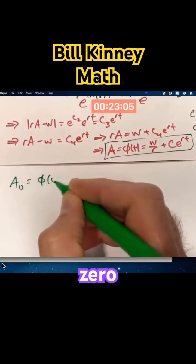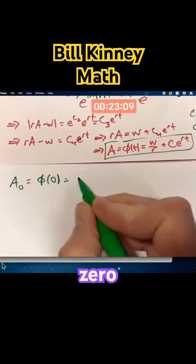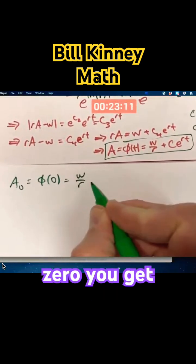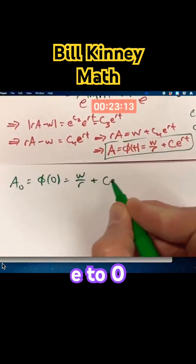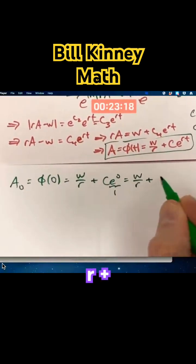is gonna be phi of zero. When we plug in t equals zero, you get w over r plus c e to the zero. e to the zero is one, so this all becomes w over r plus c.